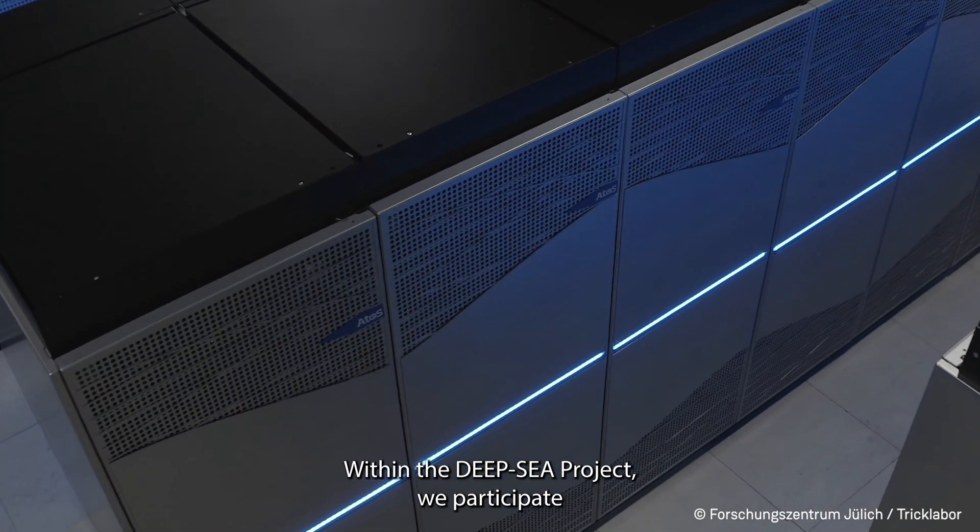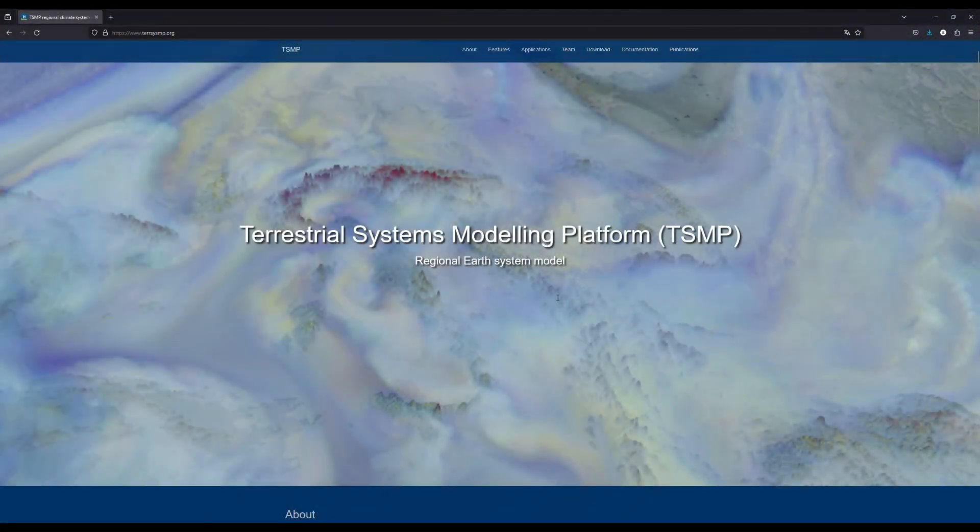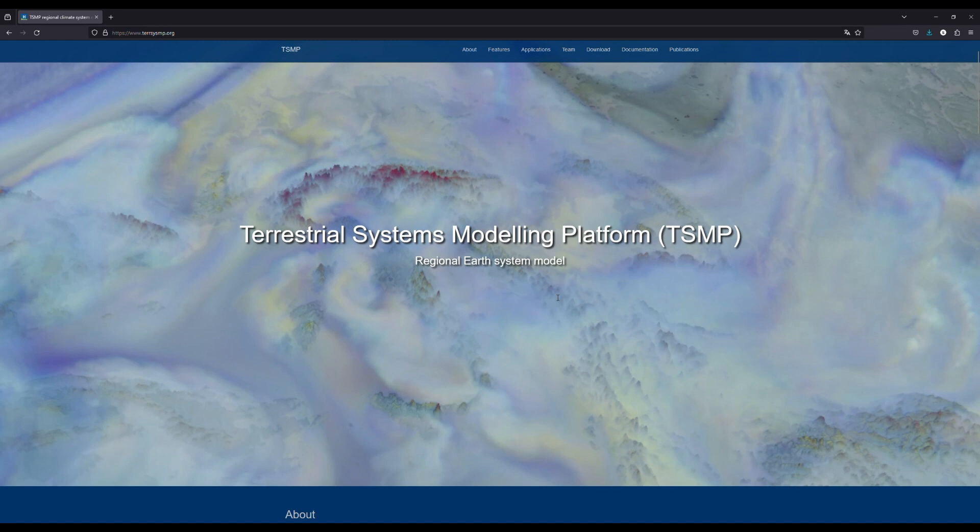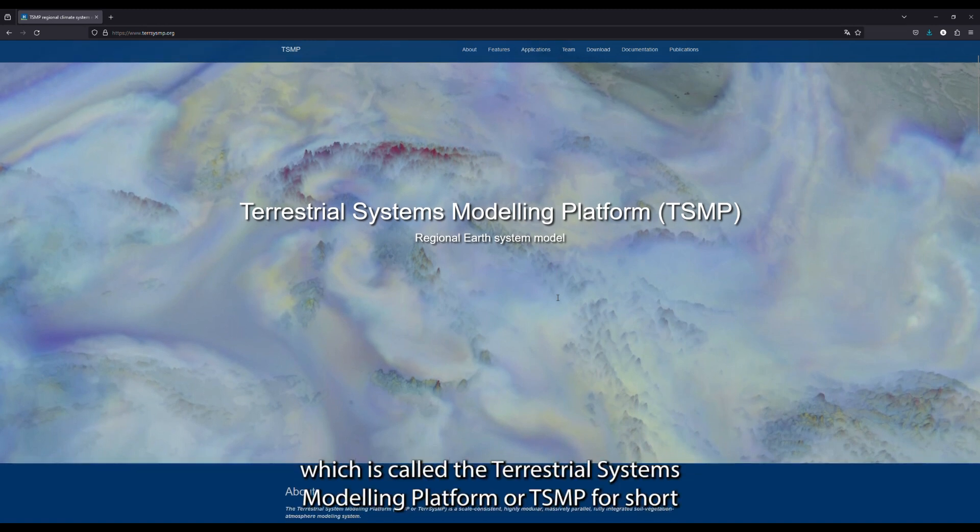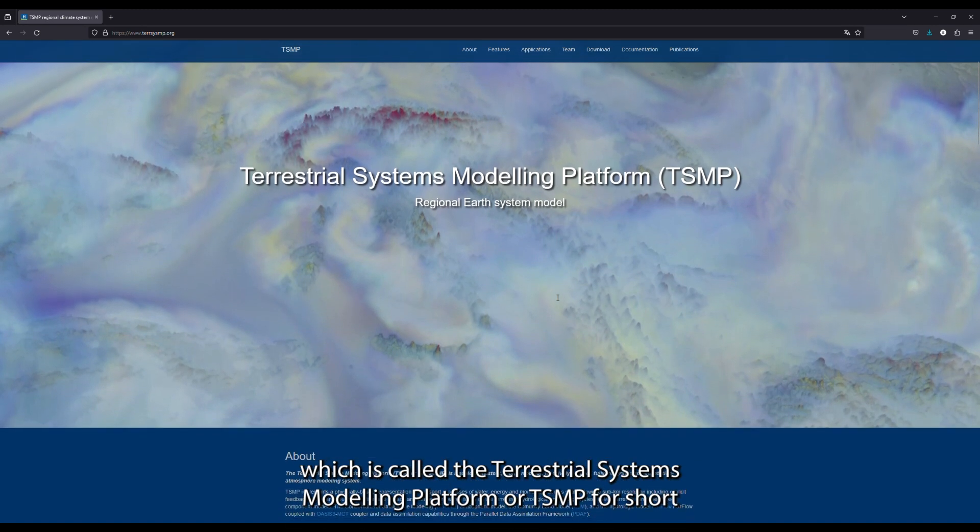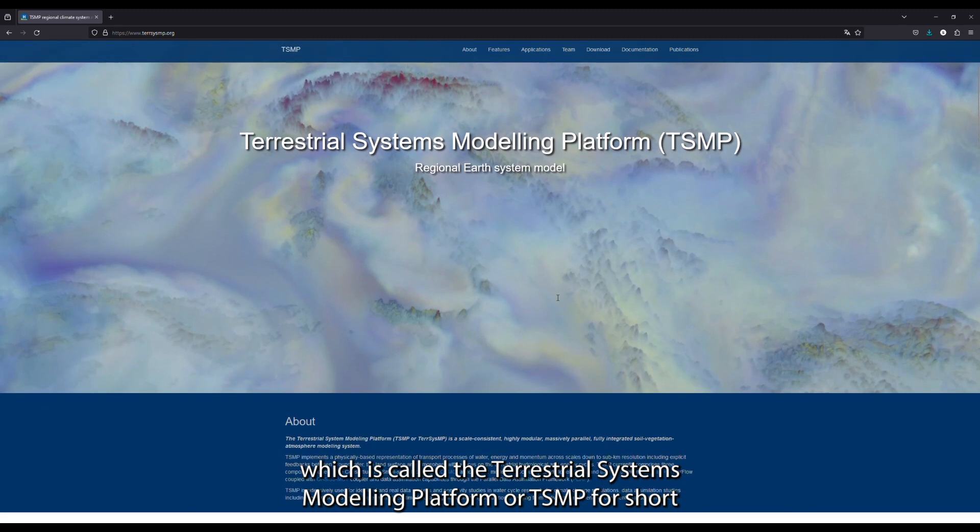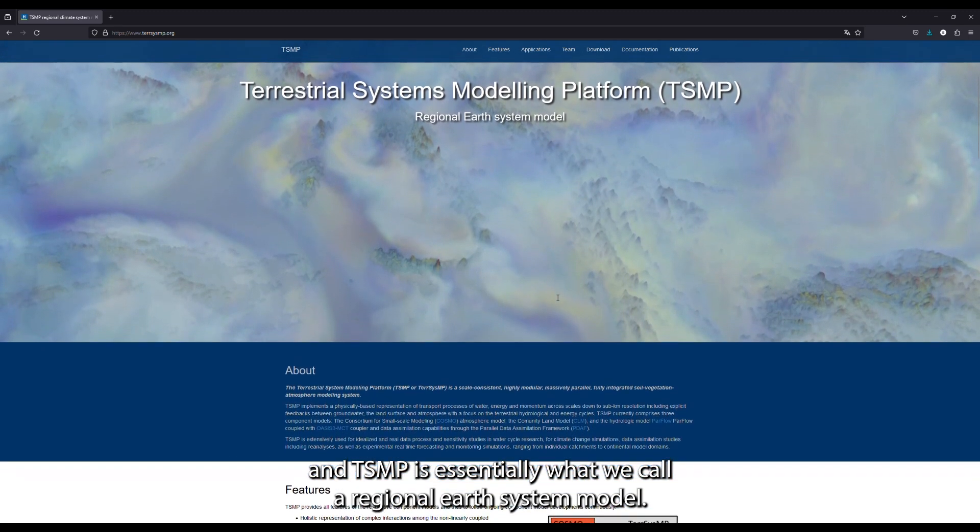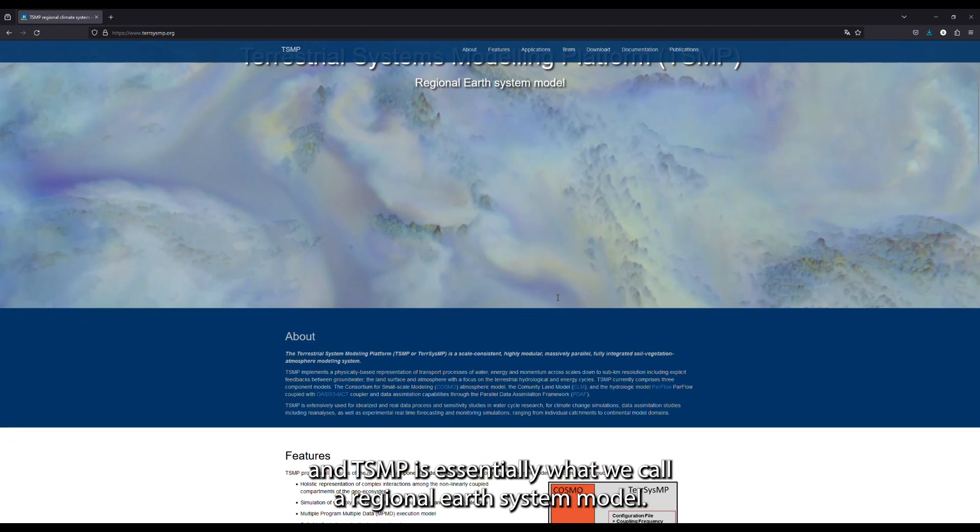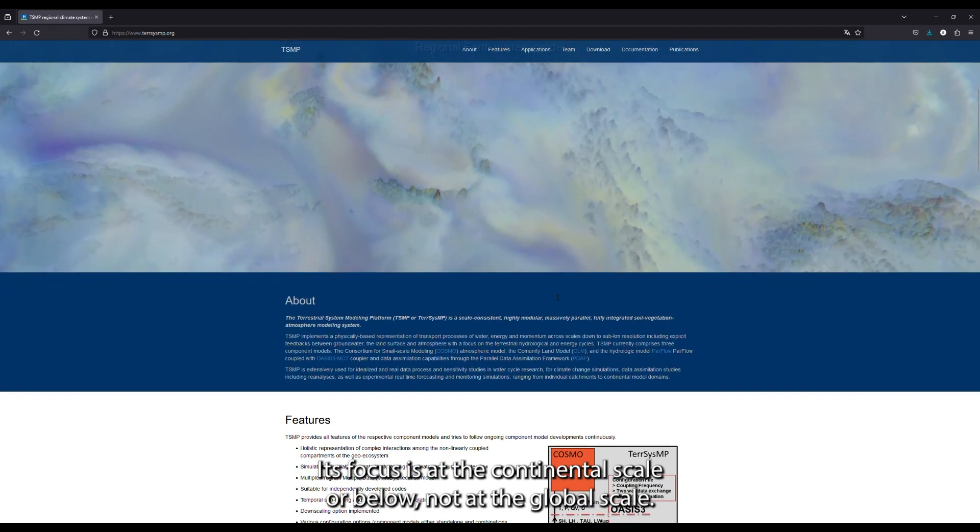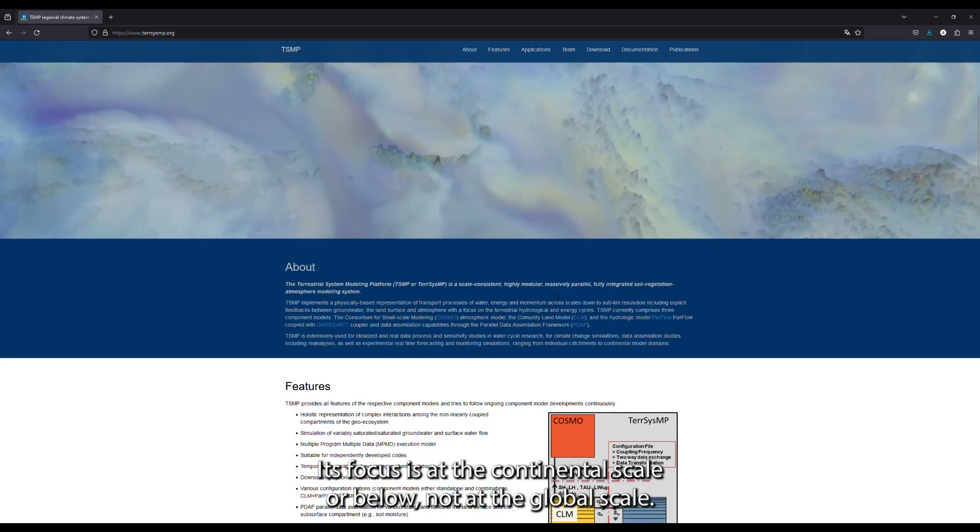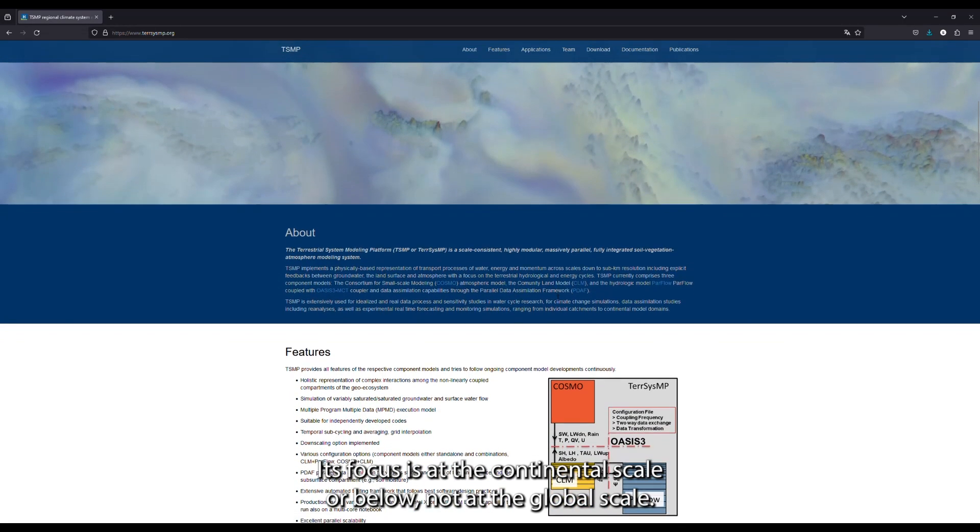Within the DeepSea project we participate with a particular application, a particular type of Earth system model which is called the terrestrial systems modeling platform, or TSMP for short. TSMP is essentially what we call a regional Earth system model. Its focus is at the continental scale or below, not at the global scale.